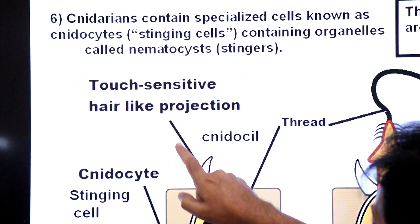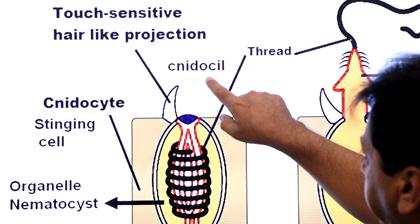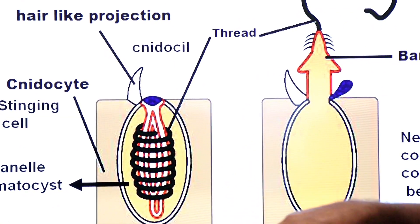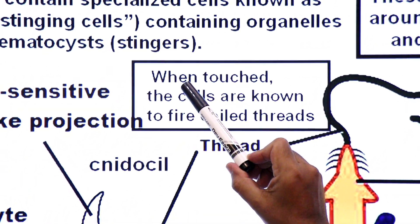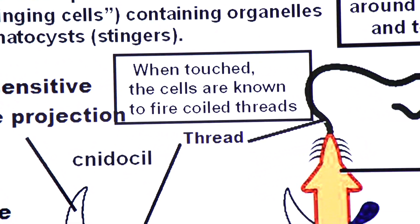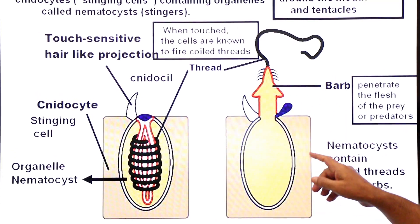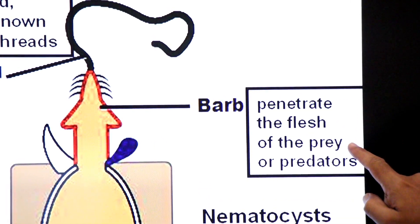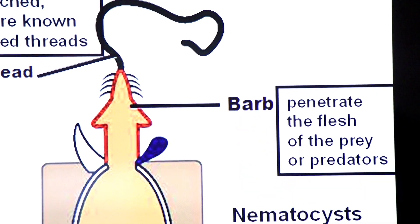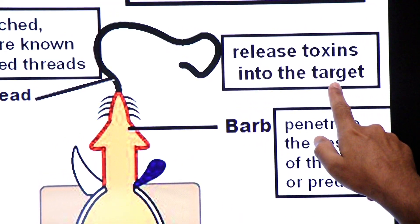On the cnidocyte there is a touch-sensitive hair-like projection which acts as a trigger. This trigger is called a cnidocil. As soon as the prey or predator touches this cnidocil, the nematocyst is fired. When the cnidocyte is touched, the cell fires the coiled thread toward the predator or prey. The barb is used to penetrate the flesh of the prey or predator, and the thread releases toxin into the target so that the prey is paralyzed.